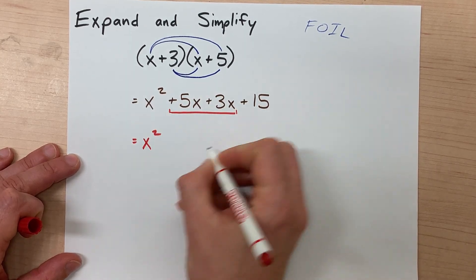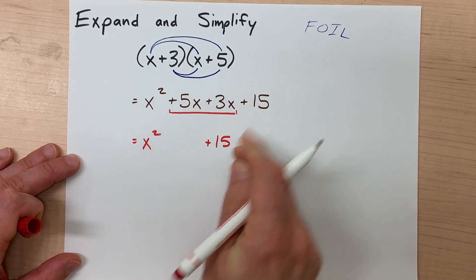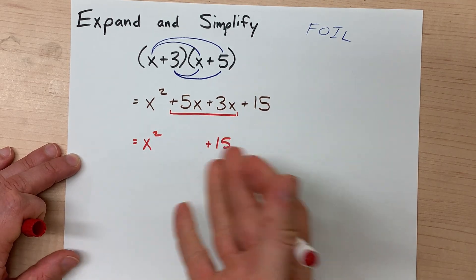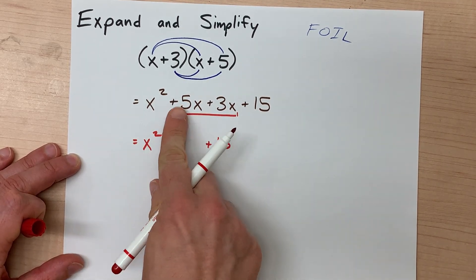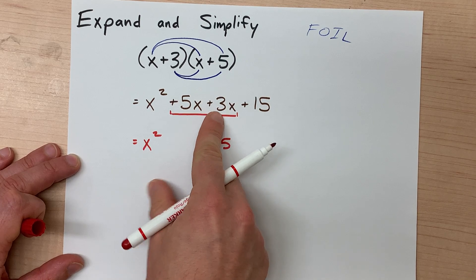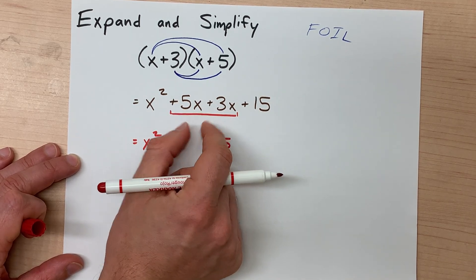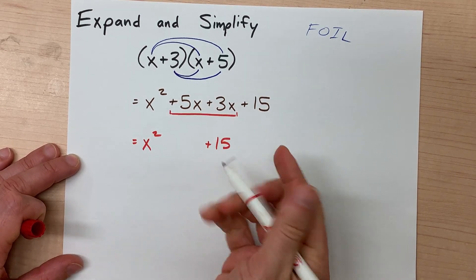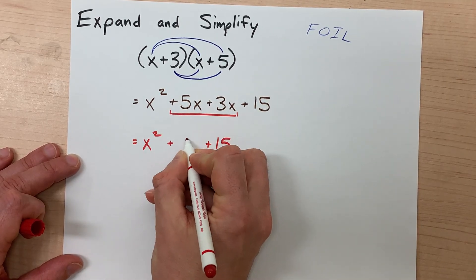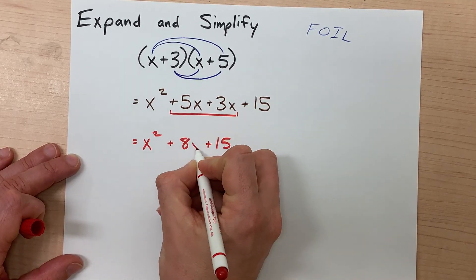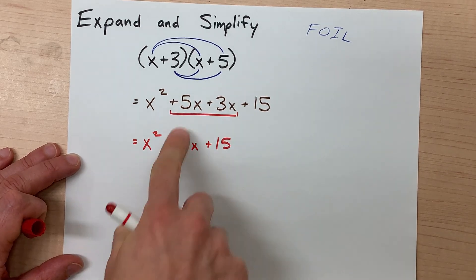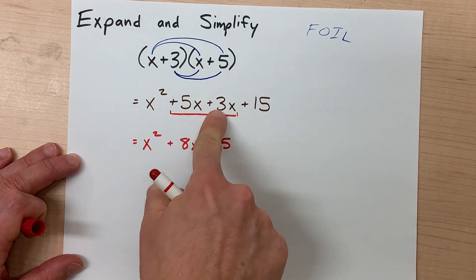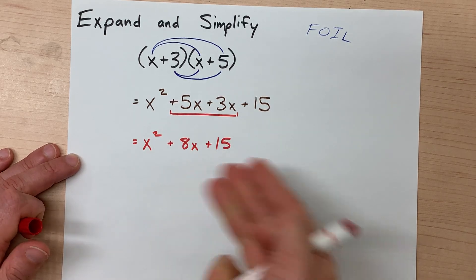Now, x squared and positive 15 will have to carry over, because there's no other terms that are similar to those here, but positive 5 and positive 3 can combine. Now that is plus or addition. So 5 plus 3 is going to give us 8, and we have to rewrite the x to show that we had 5 of them and 3 of them combining to make 8 of them.